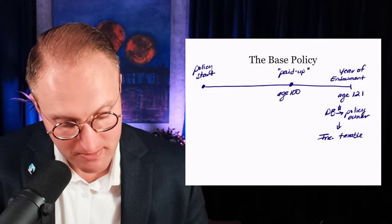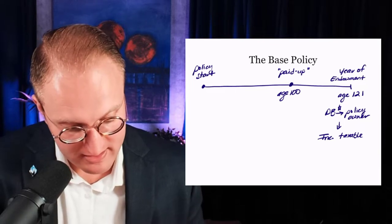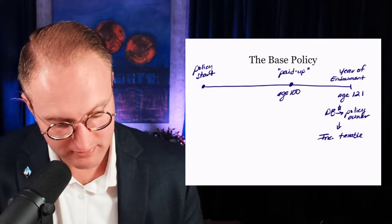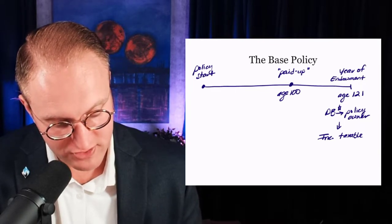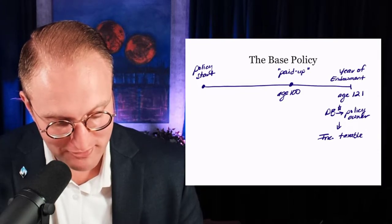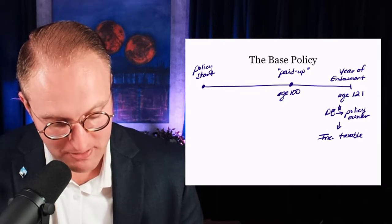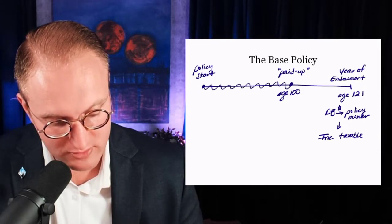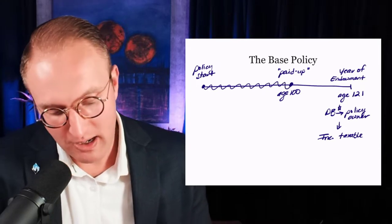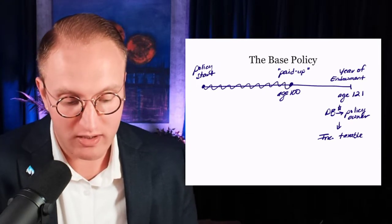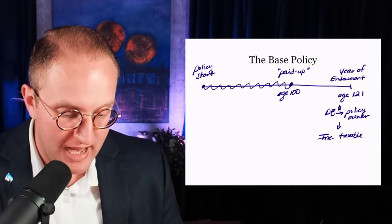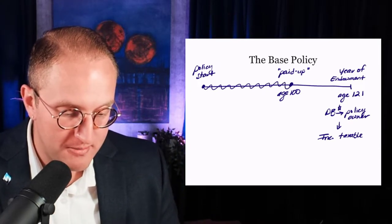So base premium is payable from the time the policy goes in force through an annual payment schedule up until age 100, when in this example the initial death benefit is paid up.